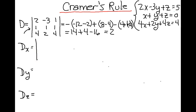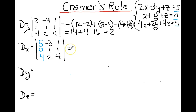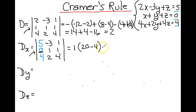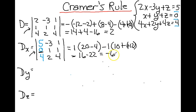When I do D sub x, I replace my x coefficients with the numerical values of my equations: 5, 0, and 4, and use the coefficients of y and z. I'm going to expand by my middle row again. I notice the first minor is multiplied by 0, so I don't need to calculate it. I add my next minor: 20 minus 4. Then I subtract my last minor: 10 minus negative 12, which gives 22. So that's 16 minus 22, giving us negative 6.